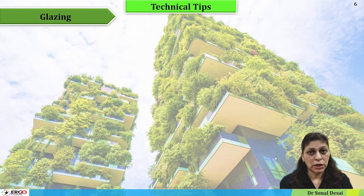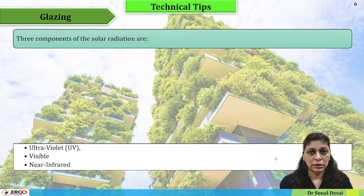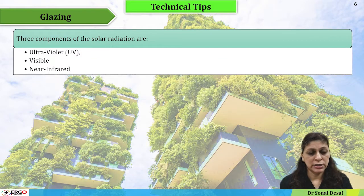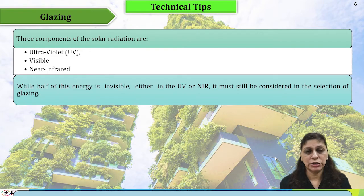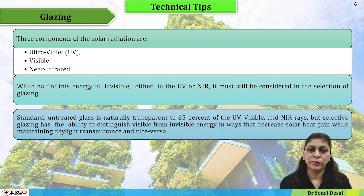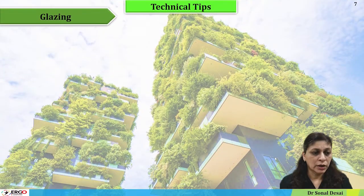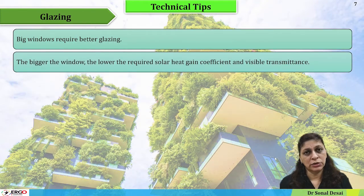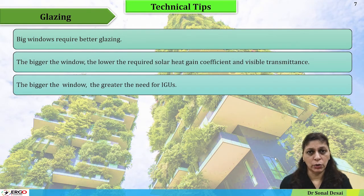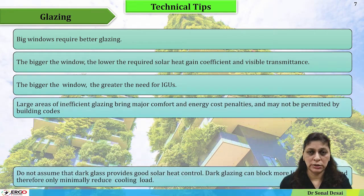Three major solar radiation parameters — ultraviolet rays, visible rays, and infrared rays — are covered. How to consider glazing so that solar heat gain is minimized, especially in hot and humid climates, is a goal of this course. There are also important tips given to help make the final decision of selecting glazing.